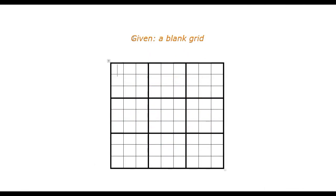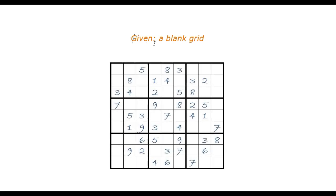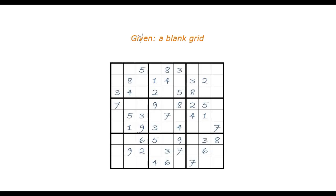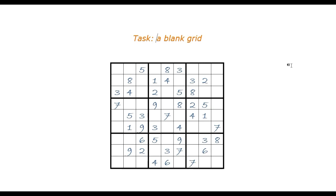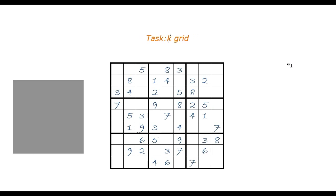You are given a line-by-line blank grid. You have nine rows, nine columns, and nine mini-boxes. Your task is to create a classic Sudoku puzzle — a Sudoku puzzle that has one and only one solution.